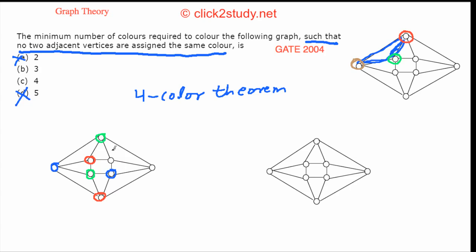Now we come to an interesting point about this node. Can we color it with green? No — green is adjacent to this green vertex. Can we color it with blue? No — blue is adjacent here. Can we color it with red? No — red is adjacent here as well. We've exhausted all three choices and have to go for a fourth color. So the three-color option is eliminated too, and we are left with four colors.